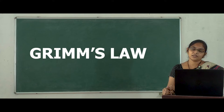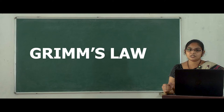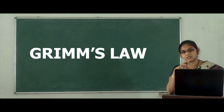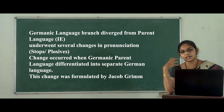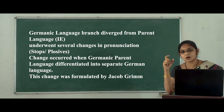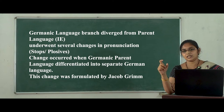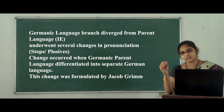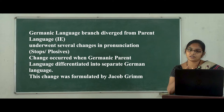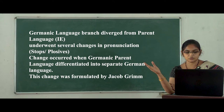Coming to Grimm's Law. Grimm's Law talks about the changes that happened in the Germanic language when it came from Indo-European language. Indo-European language is the oldest form of language. When Germanic language diverged from its parent Indo-European language, there occurred certain changes in the pronunciation of words, especially the change in the consonant sounds. This was formulated by Jacob Grimm, and this is what we call Grimm's Law — the systematic study and categorization of consonant sounds from Indo-European language to Germanic language.